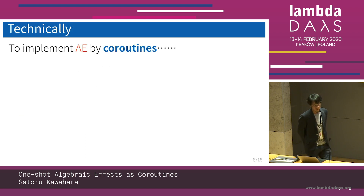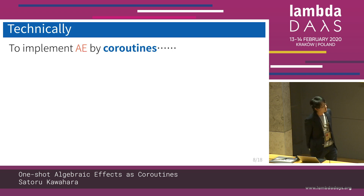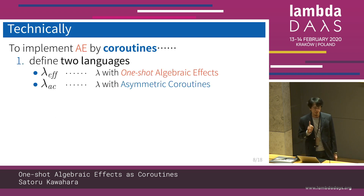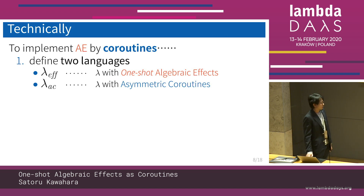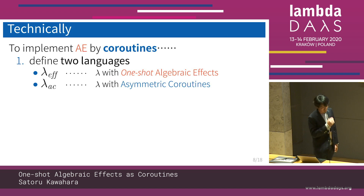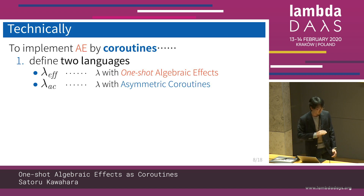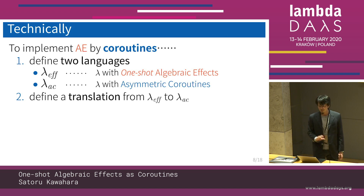To implement algebraic effects by coroutines, we take two steps. First, we define two languages: lambda-f and lambda-ac. Lambda-f is a language based on lambda calculus with one-shot algebraic effects. Lambda-ac is also based on lambda calculus with asymmetric coroutines. Asymmetric coroutines are a variant of coroutines that allows parent-child relations among coroutines, and it is more similar to and more popular than other variants such as symmetric coroutines. Next, we define a translation from lambda-f to lambda-ac.